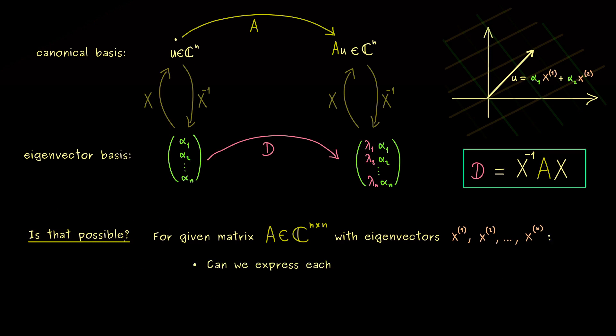Therefore, we could reformulate the question as, can we express each vector u in C^n as a linear combination consisting of eigenvectors. Of course, if we can, we can rewrite u with the coordinates here and the whole picture works.